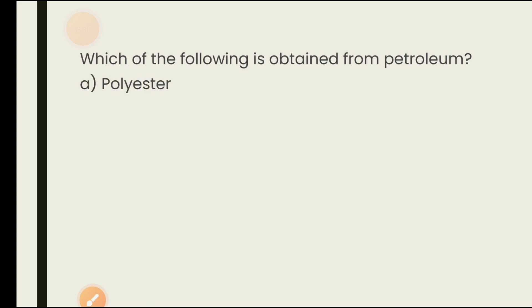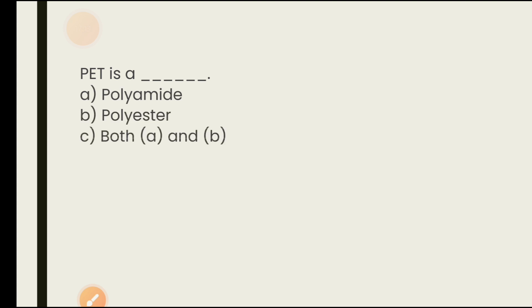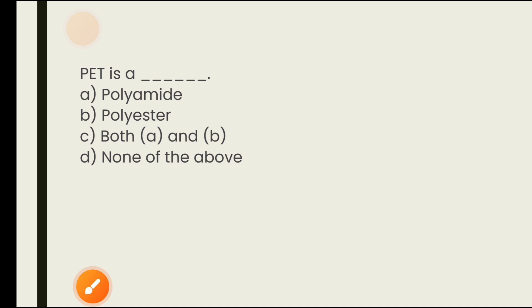Which of the following is obtained from petroleum? Options are polyester, chute, nylon, none of the above. Polyester is a robust fiber that absorbs very little water and is synthesized from petroleum products. The answer is polyester. PET is basically polyester — its full form is polyethylene terephthalate. It is molded into plastic bottles and used for packing food and other consumer products.